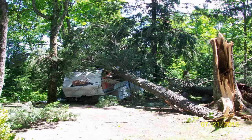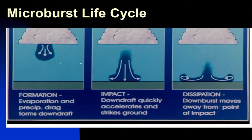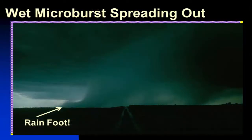Wind speed can occasionally exceed 100 miles per hour, producing damage similar to some weaker tornadoes. In addition, as the air impacts the ground and spreads out laterally, it often produces a vortex or curl along its leading edge which is called a rain foot, making it possible to identify a downburst visually from a distance.